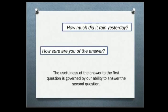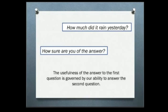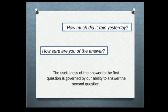How much did it rain yesterday and how sure are we of that answer? Obviously, if we can't answer the second question, then the first answer is not that useful to us. If we know that it rained 10 millimeters per day but the uncertainty related to that measurement is 200 percent, then is that 10 millimeters really useful to us? That's the main question I'm trying to answer here.